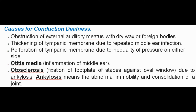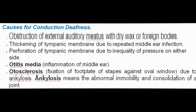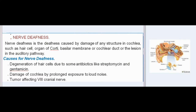Ankylosis means the abnormal immobility and consolidation of a joint. Nerve Deafness is the deafness caused by damage of any structure in the cochlea, such as hair cells, organ of Corti, basilar membrane, or cochlear duct, or by a lesion in the auditory pathway. Causes for Nerve Deafness: